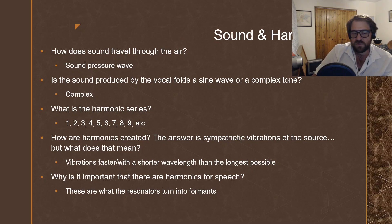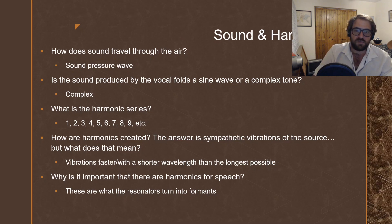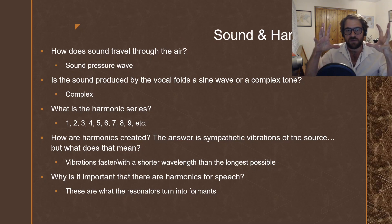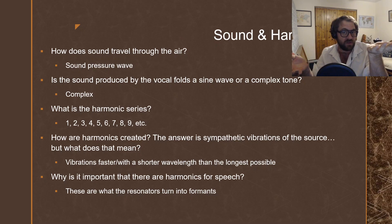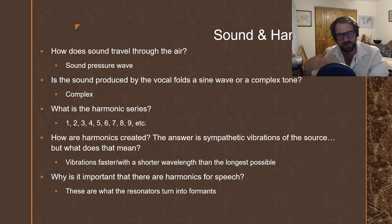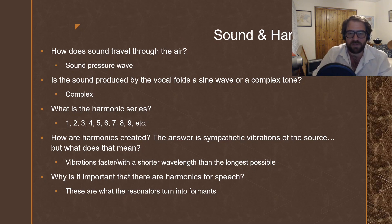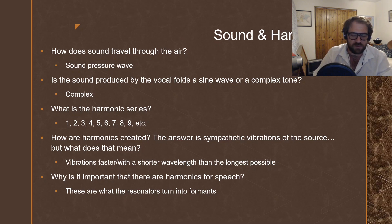These are what the resonators use to turn into formants. They're going to shape those harmonic overtones — some of them are going to become accentuated, some dampened. The ones that are accentuated are formants; the ones that are dampened aren't formants. We'll talk more about that when we talk about resonance and articulation.